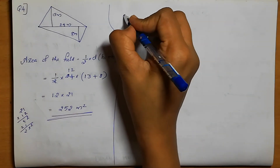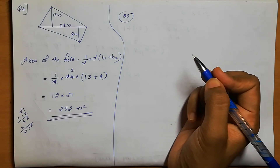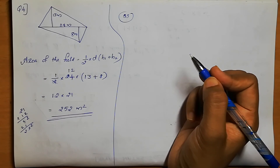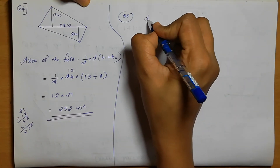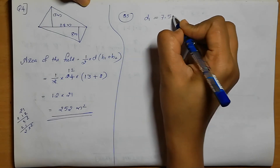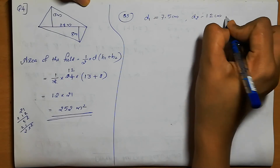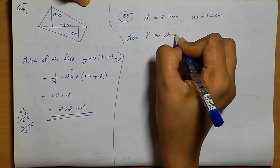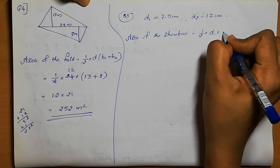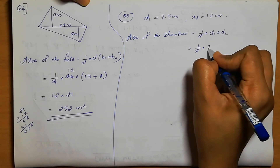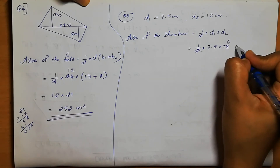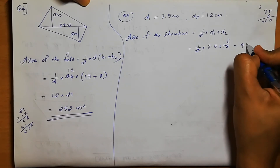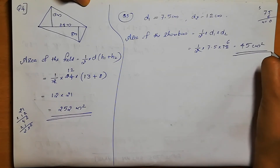Question number 5: The diagonals of a rhombus are 7.5 centimeter and 12 centimeter. Find its area. D1 = 7.5 cm, D2 = 12 cm. Area of rhombus = half into D1 into D2 = half into 7.5 into 12 = 7.5 into 6 = 45. The area of the rhombus is 45 centimeter square.